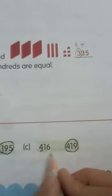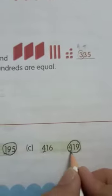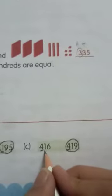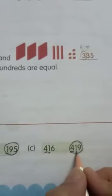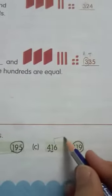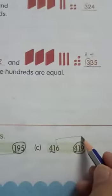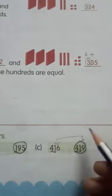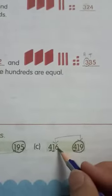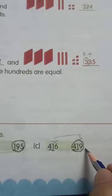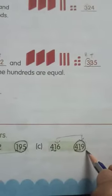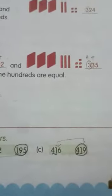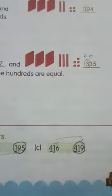Now on the hundreds place we have the same number, and also on the tens place we have the same number. So now you should compare the numbers which are on the ones place. Here 6 is less than 9, so 419 is the greater or bigger number.